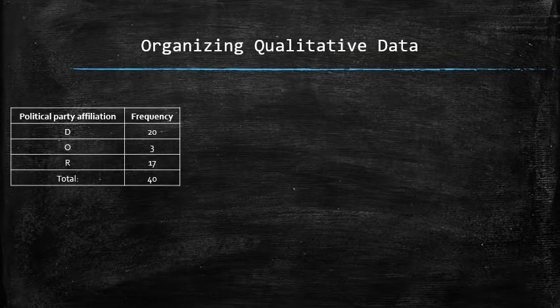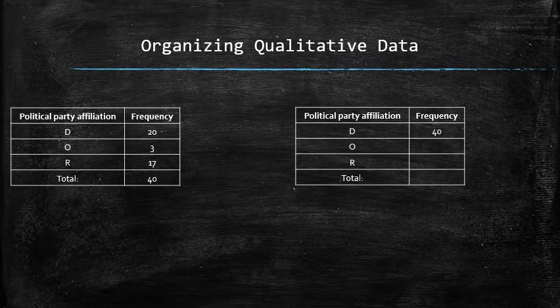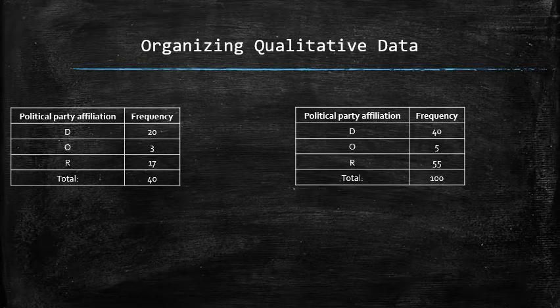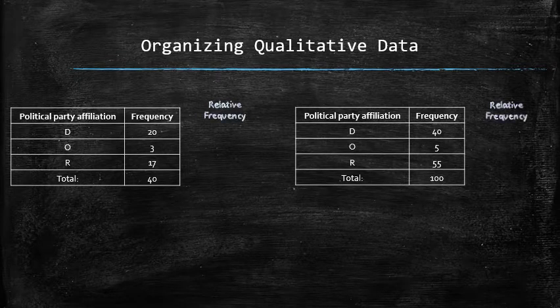Let's compare the results from the same survey of a different class. We see that the number of people that support Democrats in the other class is 40. Can we conclude that Democrat supporters prevail in the other class twice as much? Well, not if you see the entire frequency table. It turns out that a frequency table doesn't show the whole picture. We can compare apples to apples if we compare the corresponding relative frequencies.